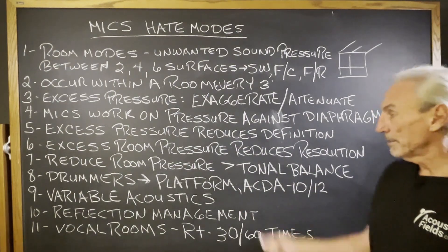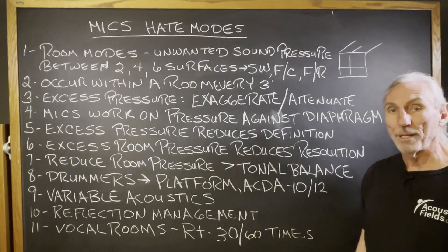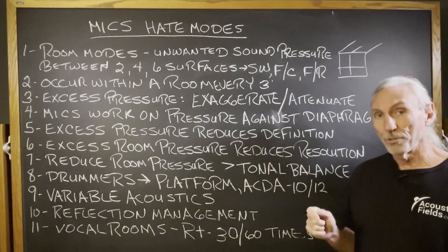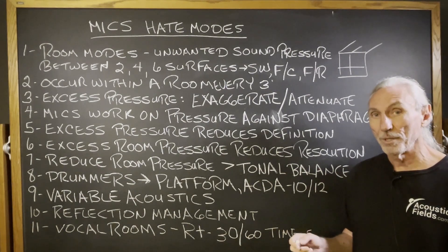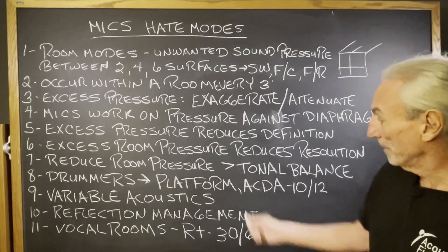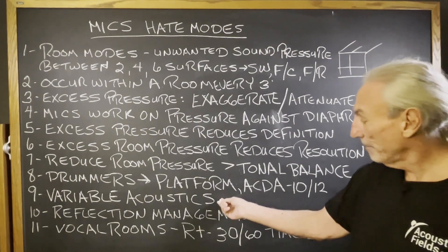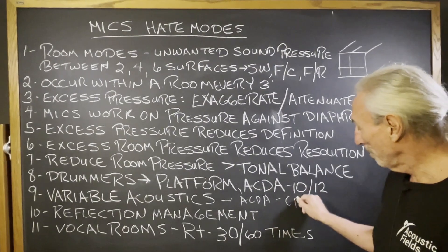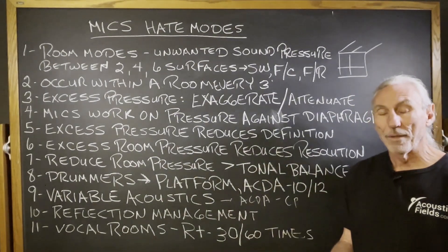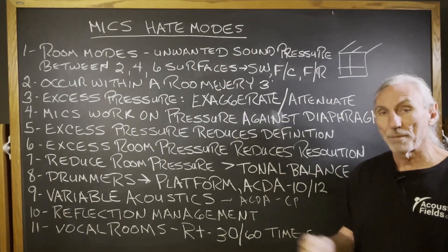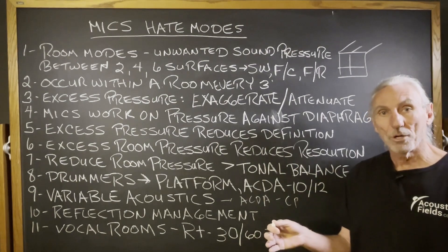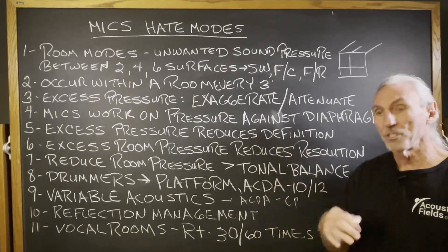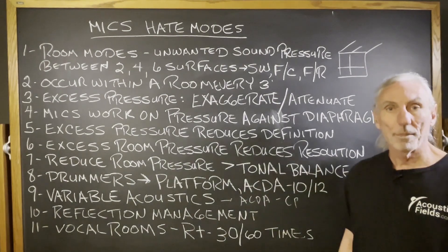Drum platforms — our ACDA-10 series — if we reduce the pressure, we get more tone balance. Drummers call me all the time who use our platforms and tell me they get so much definition and resolution that they play quieter, which is always welcome, especially if you're next door to them. We also have the variable acoustic program — the ACDA series and the carbon panel. Both those units are on wheels so you can move them around. Drummers move them closer to the drums for a particular tonal quality to match a song, or move them farther away to open it up a little bit. There are ways to control the acoustics in the room by moving products in and out.